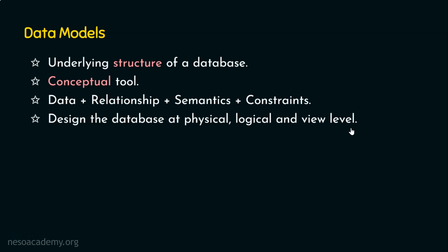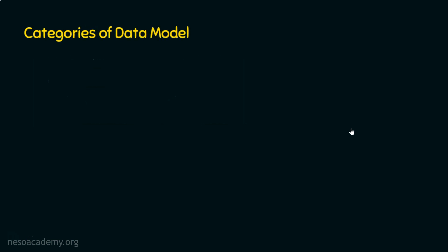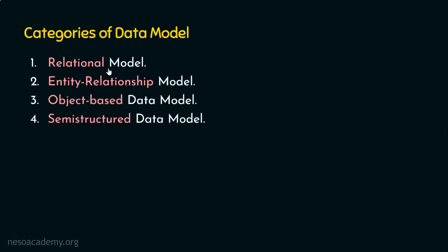We are done with the basics of data model. Let's now see the various categories of data model. In this presentation, we are going to focus on four different categories: the first one is the relational model, the second one is the entity relationship model, the third one is the object-based data model, and the last one is the semi-structured data model. We have other data models as well, but in this presentation we are going to focus only on these four.